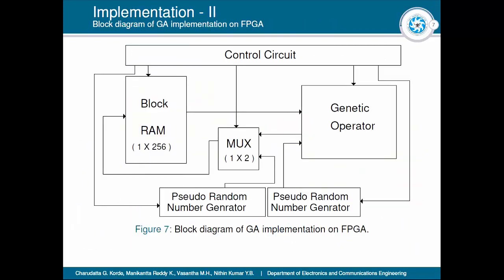I have implemented the genetic algorithm search on an FPGA. It consists of RAM, genetic operators, a control circuit, and a pseudo-random number generator. This is what I will be developing further.